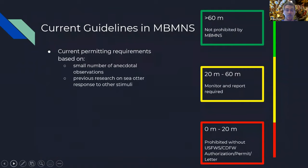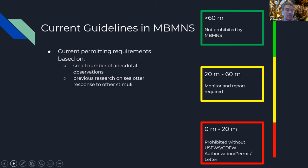There are actually current guidelines for how to use drones in the Monterey Bay Marine National Sanctuary. Below 20 meters, you need a special use permit that's really hard to get. Between 20 meters and 60 meters, you need an experienced sea otter monitor watching while you fly and must submit a report afterward. Above 60 meters, it's not prohibited or regulated by the Sanctuary. However, these guidelines are based on only a small number of anecdotal observations and research on sea otter responses to other stimuli — they don't account for different types of drones, different sizes, or different flight patterns.